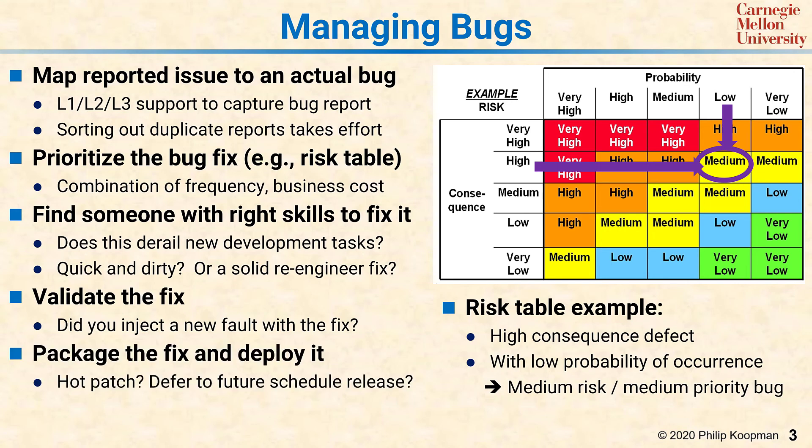Finally, you have to package the fix and deploy it. Is it a hot patch? Is it a complete image? How are you going to get that fix to customers? Is a service call required? Is that fix batched up with other fixes so you can do occasional updates? Sometimes the pain and cost of deploying a fix for a low-risk bug is such that you batch it up and deploy it in a future scheduled release — hopefully as an update for the current product, but sometimes it's even deferred to the next version that customers have to pay extra for. There's no one right answer, but all these decisions have to be made as part of the bug management and bug fixing process.